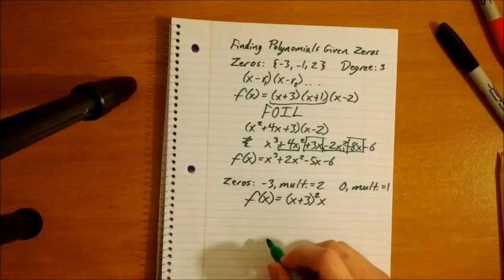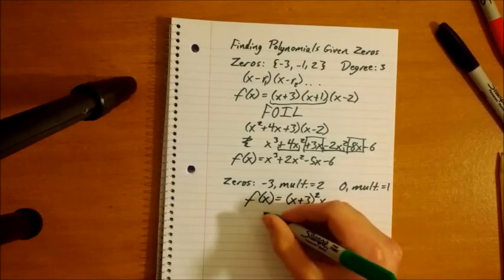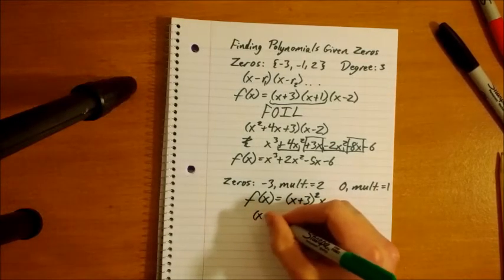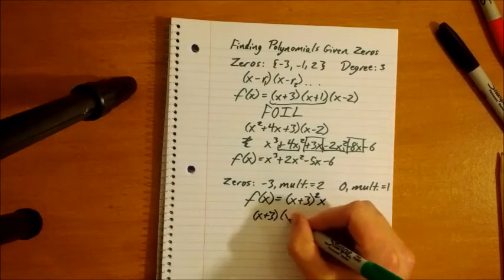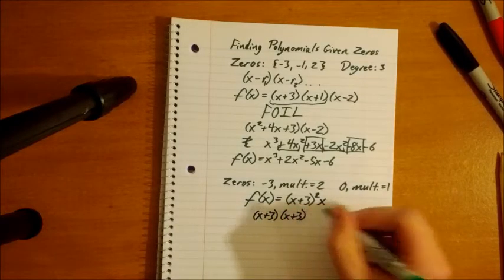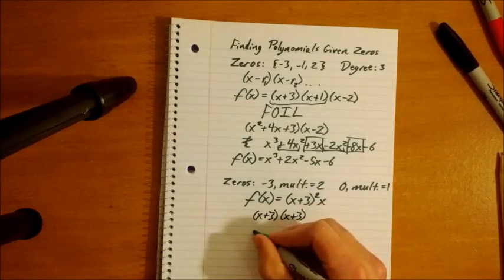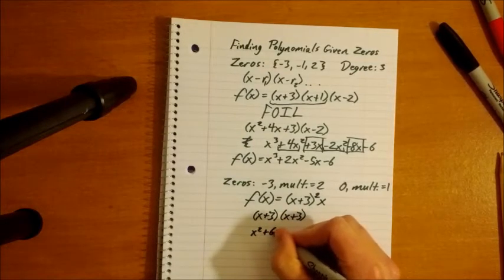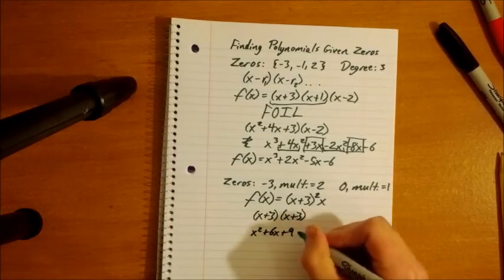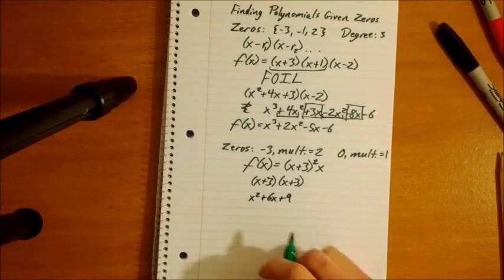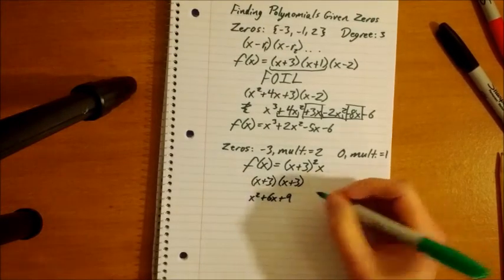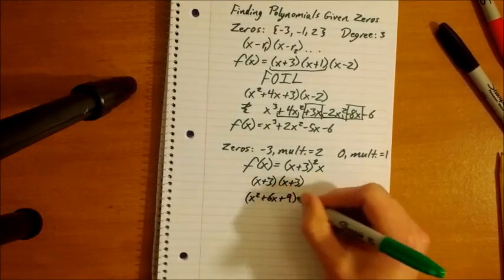And then we use FOIL again to get this all out. So we have x times 3, or x plus 3, times x plus 3. So that's going to come out to x squared plus 6x plus 9. Am I still on screen? Yes. Okay. And all that times x.